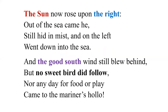Part Two. Again the description of the sun — throughout the poem, the sun is a very important symbol. The sun now rose upon the right side of the ship, showing they are now moving north. 'And the good south wind still blew behind, but no sweet bird did follow, nor any day for food or play came to the Mariner's call.' The friendly bird is gone — this is repetition showing what is now missing.